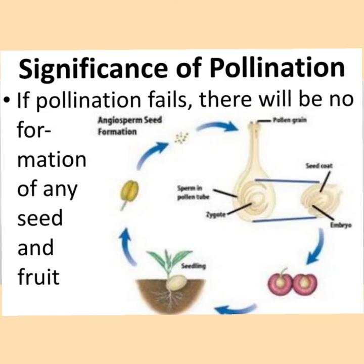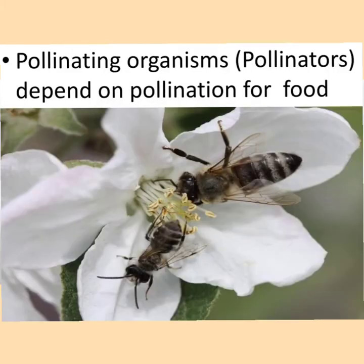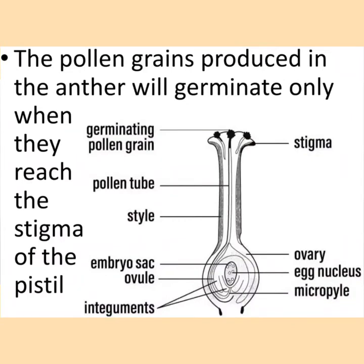In the image on the right side, you can see that a plant produces an anther. The anther produces the male gametophyte or the sperm, and the pollen grain which contains the male gamete falls on the stigma and germinates. The male gamete fuses with the ovule nuclei and forms the seed and the endosperm. So if there is no pollination, there will be no seed and fruit formation. Pollinating organisms called pollinators depend on pollination for food. The pollen grains produced in the anther will germinate only when they reach the stigma of the pistil.